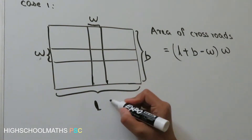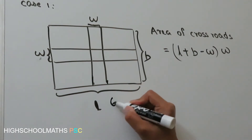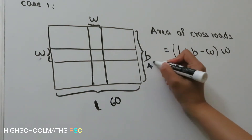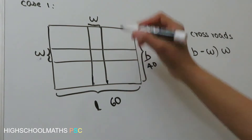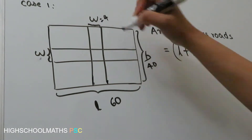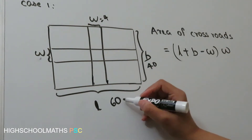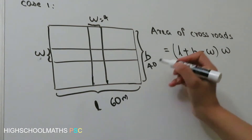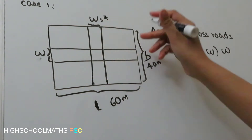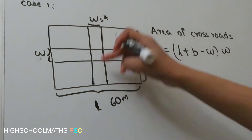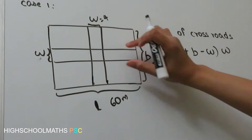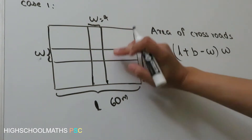For example, this is 60 and 40, and the width W is 4m. In this plot, it is located in the middle of the square.